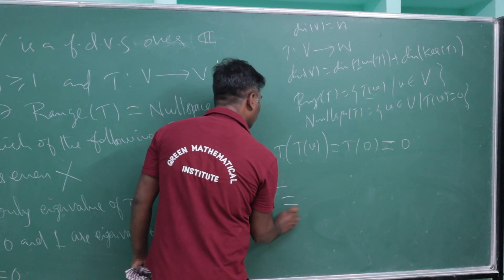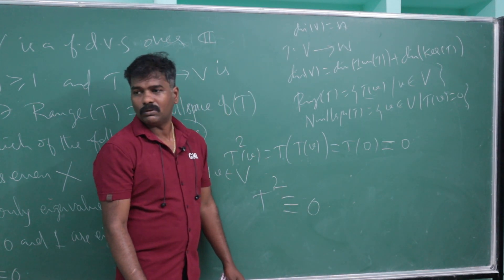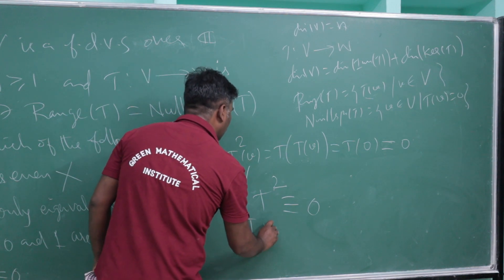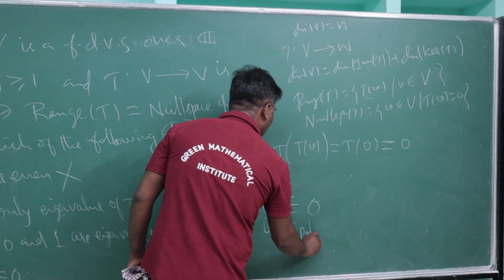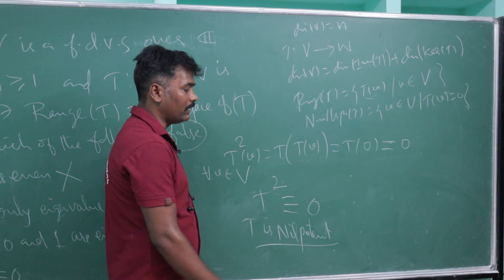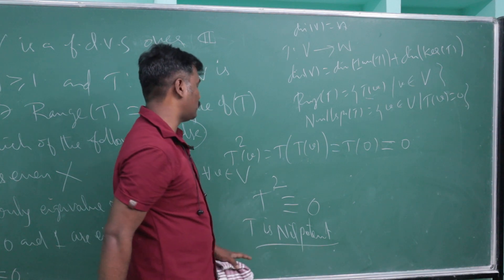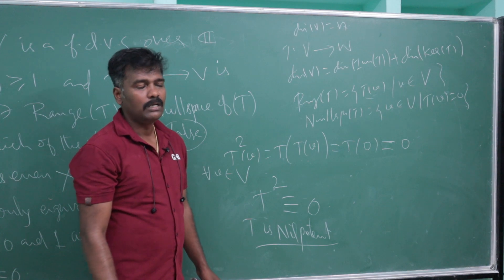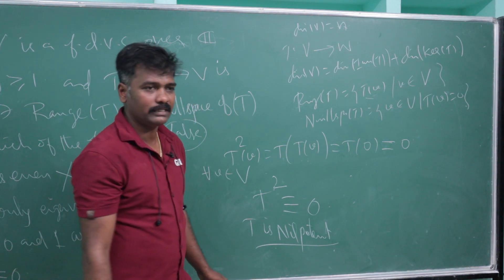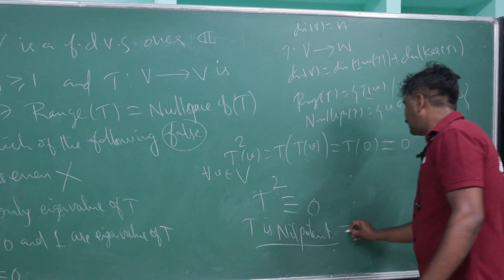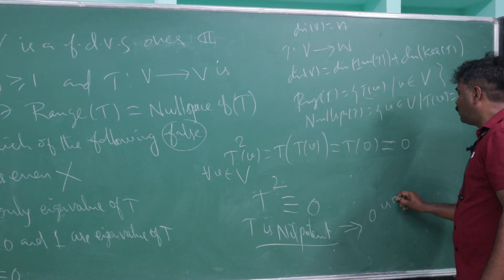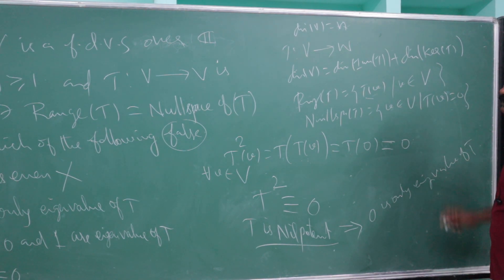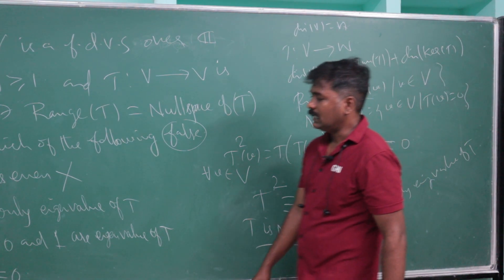Therefore, T is nilpotent — specifically T² = 0. A nilpotent matrix has 0 as its only eigenvalue. So the statement '0 is the only eigenvalue of T' is true.